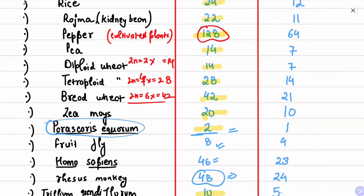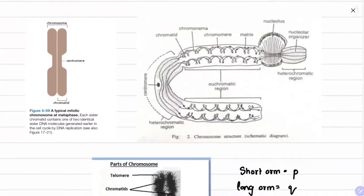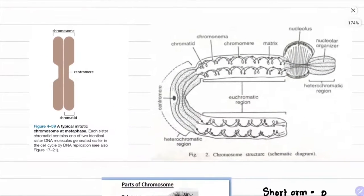Now we will study chromosome morphology. Looking at a basic chromosome diagram, you can see a centromere. Each chromosome has two chromatids, and this is a typical mitotic chromosome at the metaphase stage.